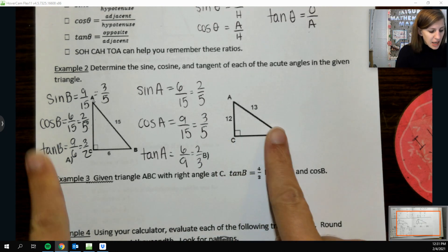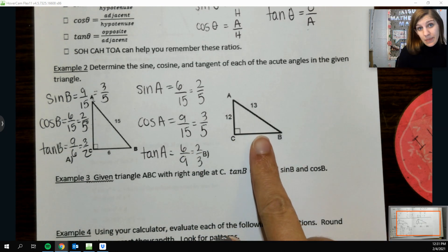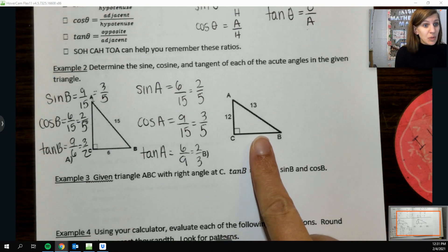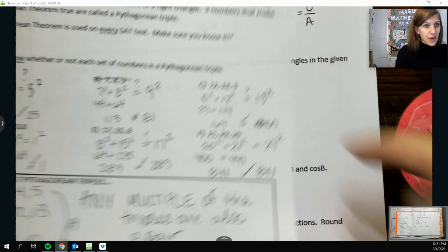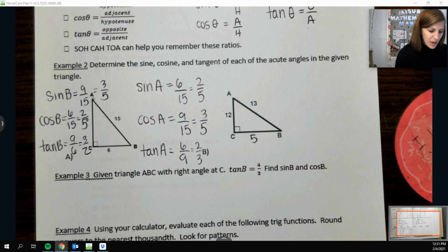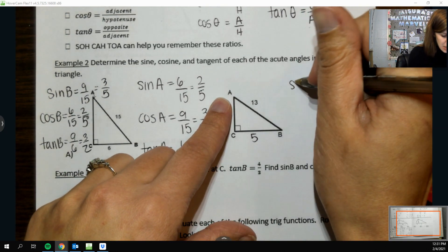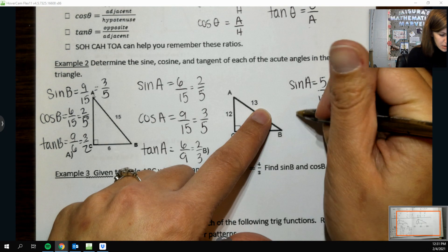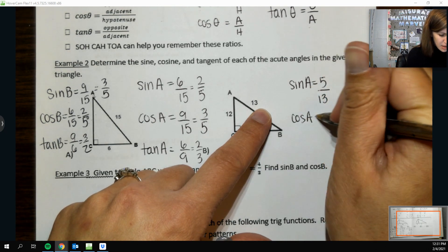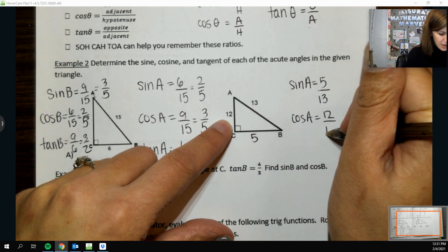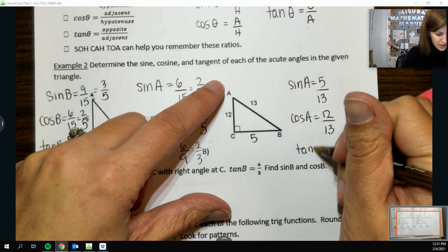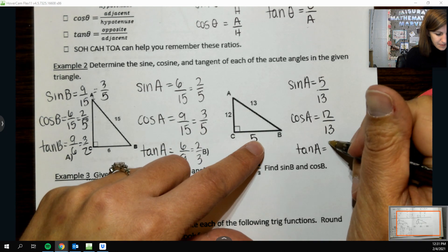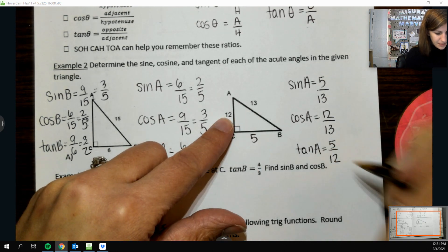Now they might give you something here like B where you don't have that third side. But you can find it because it's a right triangle and you can do the Pythagorean theorem. Or if you have those Pythagorean triples tucked away in your brain, 12, 13, and 5, this would have to be 5. So I'm not going to do it of both this time. I'm just going to do A. So sine of A is opposite over hypotenuse, 5 over 13. Cosine of A is adjacent over hypotenuse, 12 over 13. And then tangent of A is opposite over adjacent, 5 over 12.